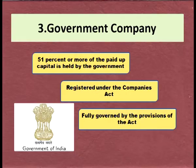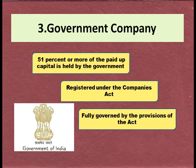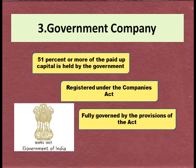The third form of public sector enterprises is the government company. A company in which 51% or more of its paid-up capital is held by the government can be called a government company. Government companies are registered under the Companies Act and are fully governed by the provisions of that Act.